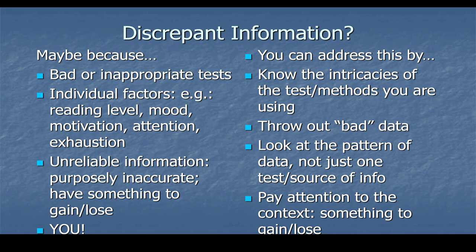We also want to look for discrepant information — data that doesn't add up due to a bad or inappropriate test, individual factors like reading level, mood, motivation, attention, or exhaustion, or unreliable information because the client has something to gain or lose. Address this by knowing the intricacies of the tests and methods you're using, throwing out bad data, looking at the pattern of data rather than just one source, and paying attention to context — whether they have something to gain or lose. I hope this helps you summarize and write a formal written evaluation, which will be in the next module. Thank you and have a great day!